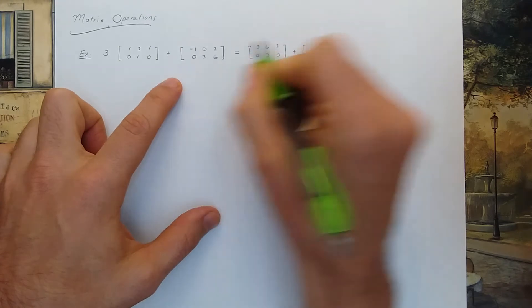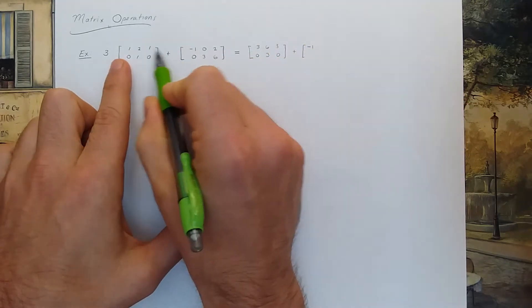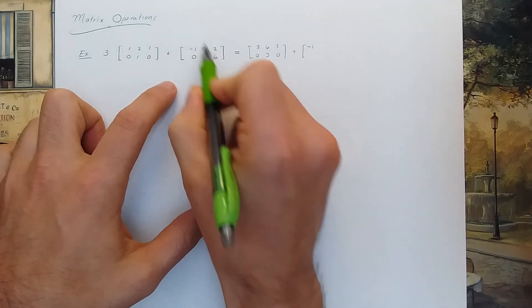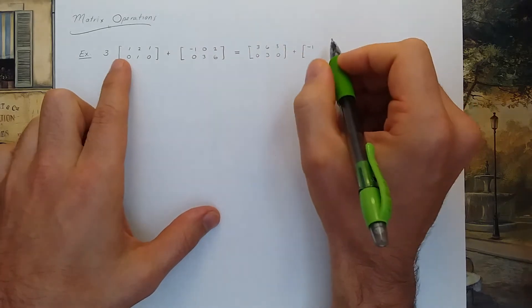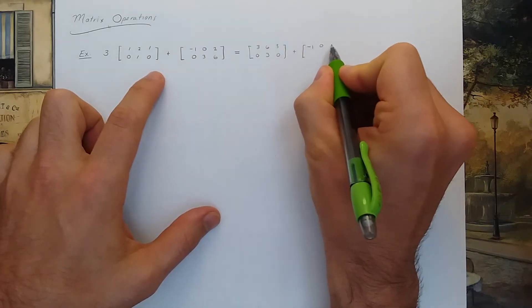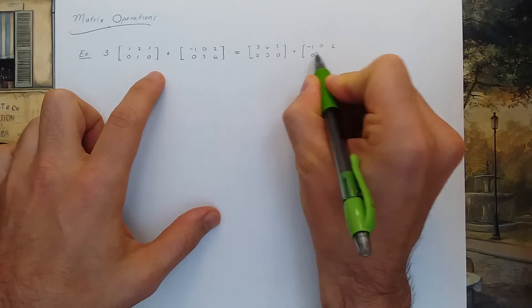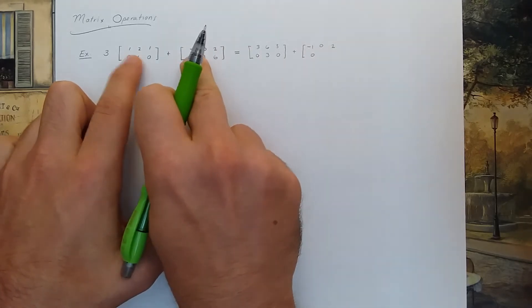And then you can add it to this matrix because they're both matrices with two rows and three columns. So you could add them component-wise. You just add the two entries in the same component together.